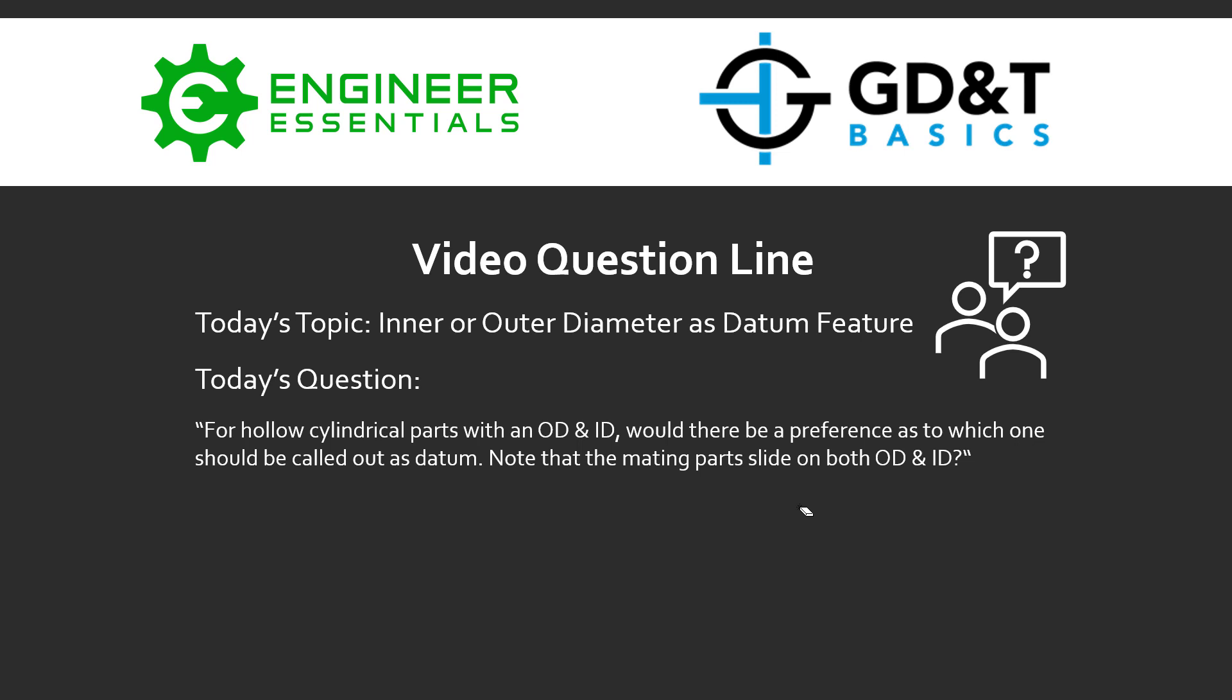Hey everybody, Jason here with GD&T Basics again on the video question line. Today's topic is inner and outer diameter as datum features. Today's question is: for hollow cylindrical parts with both an OD and an ID, that being outer diameter and an inner diameter, would there be a preference as to which one should be called out as a datum?